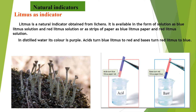We are going to study natural indicators first, and in that, litmus as an indicator. Litmus is a natural indicator obtained from a group of plants called lichens. Lichens are formed by symbiotic association between algae and fungi. The extract of lichen gives what we call litmus solution, available as blue litmus solution, red litmus solution, or strips of paper known as blue litmus paper or red litmus paper.